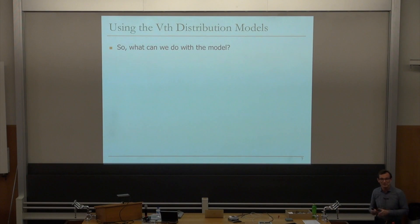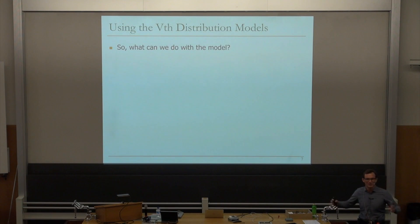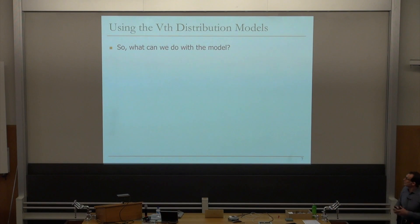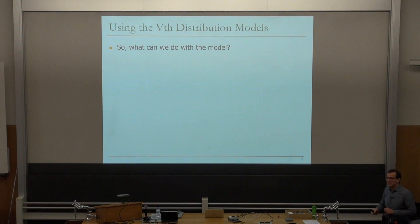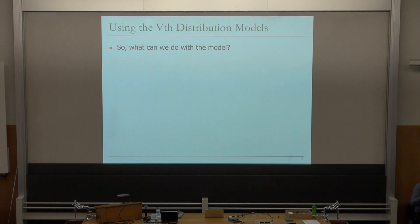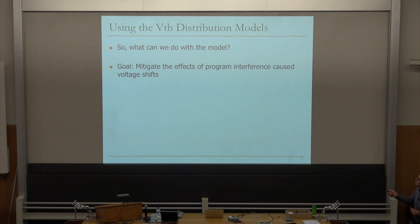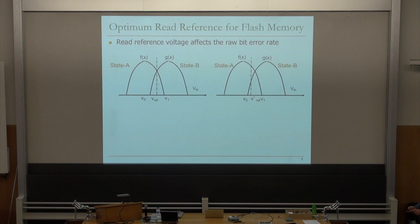There are flash memories that are three-level cells — unfortunately named, but it's really three bits encoded in a voltage range, which is eight states or eight levels. People are looking into encoding four bits within the voltage range. This threshold voltage distribution is important to understand because the re-reference voltages you pick are critical for how many errors you get when reading.